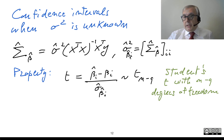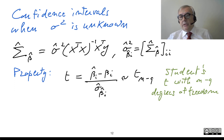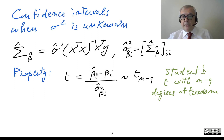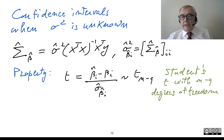Now we need a statistical property. If I perform a pseudo-standardization — taking beta-hat-i minus beta-i, the true value which is the expectation of beta-hat-i, divided not by the true standard error but by the estimated standard error — then this statistic is distributed as a Student's t with N minus Q degrees of freedom.